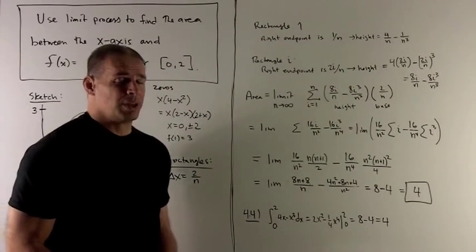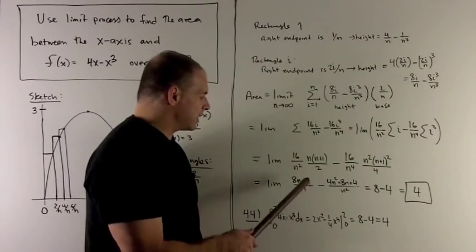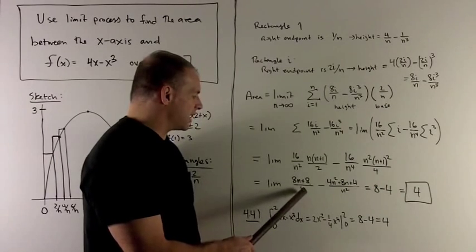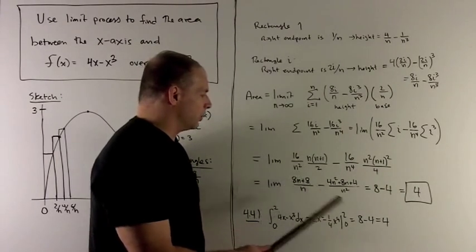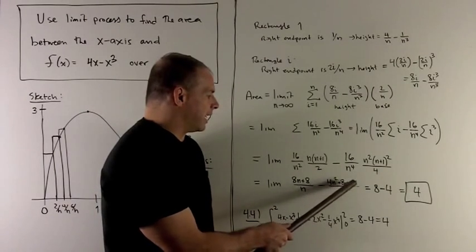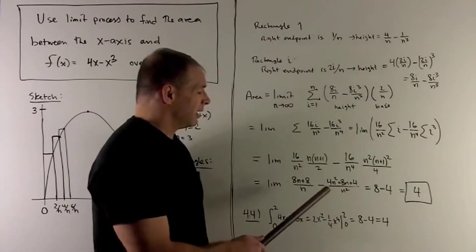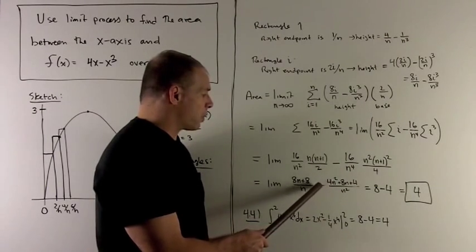Remember the rule for the limits. You only need to keep the highest powers of n. So in this case, the 8 goes away, the n's cancel, my limit goes to 8. For this term, we can throw away the 8n plus 4, which leaves me with 4n squared over n squared. The n squareds go away, leaving me with 4.